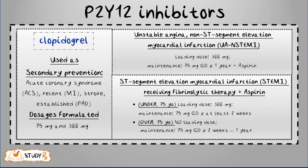For ST segment elevation myocardial infarction (STEMI) patients receiving fibrinolytic therapy in combination with aspirin and appropriate anticoagulant: for patients 75 and under, the loading dose stays at 300 mg, but the 75 mg maintenance dose can be as little as two weeks. For patients over 75, there is no loading dose — they receive only 75 mg for two weeks up to one year.